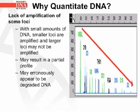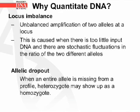Lack of amplification of some loci occurs with small amounts of DNA. Smaller loci are amplified and larger loci may not be amplified, which can result in a partial profile or the profile may erroneously appear to be from degraded DNA. The diagram shows that the peak heights of the smaller loci which come off first are much higher than the peak heights of the larger loci which come off later. Locus imbalance occurs when there is unbalanced amplification of two alleles at a locus, caused by too little input DNA and stochastic fluctuations in the ratio of the two different alleles.